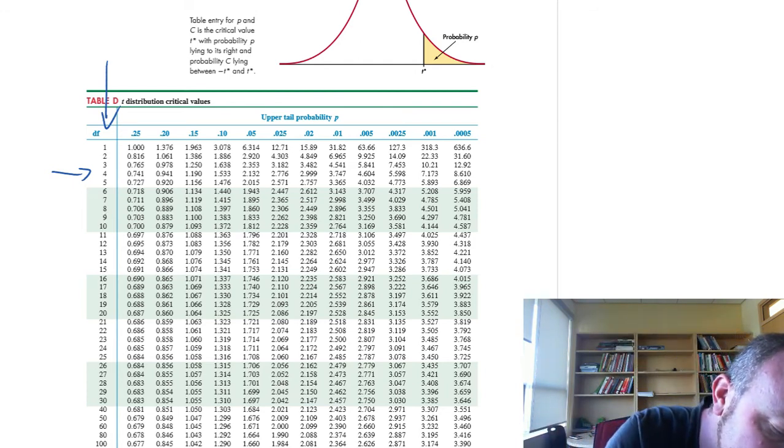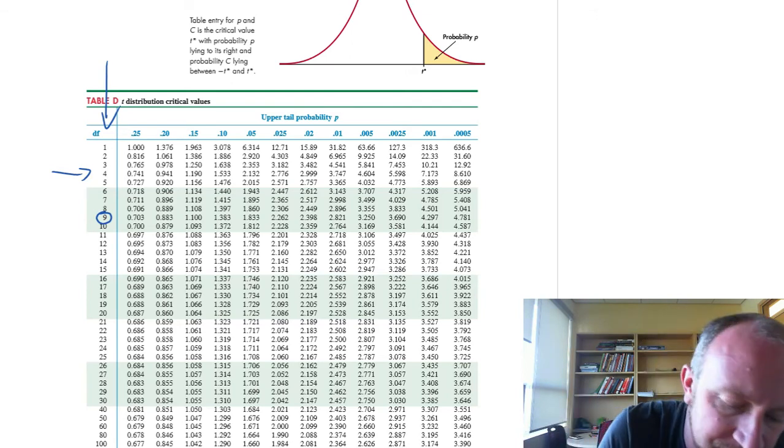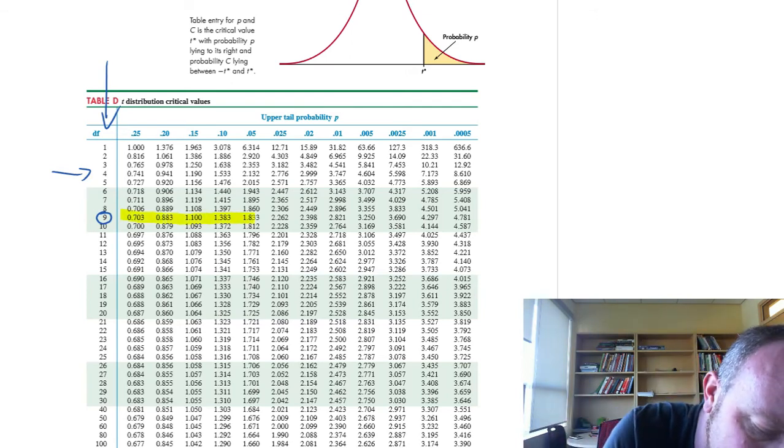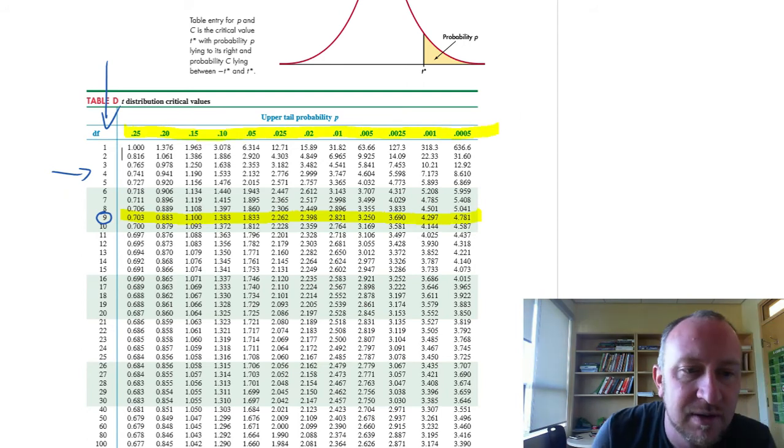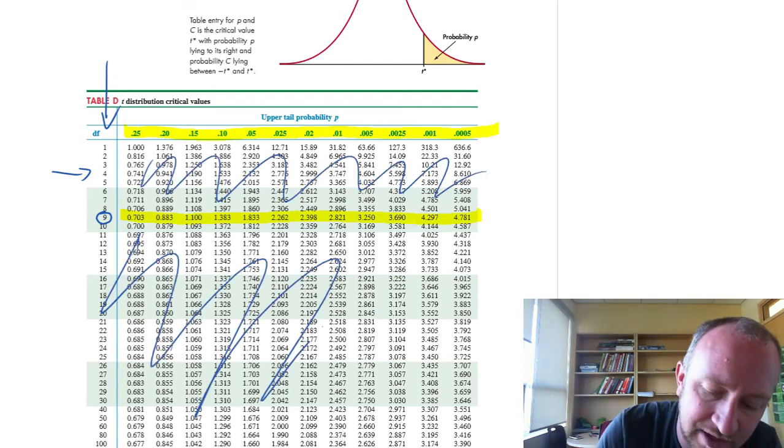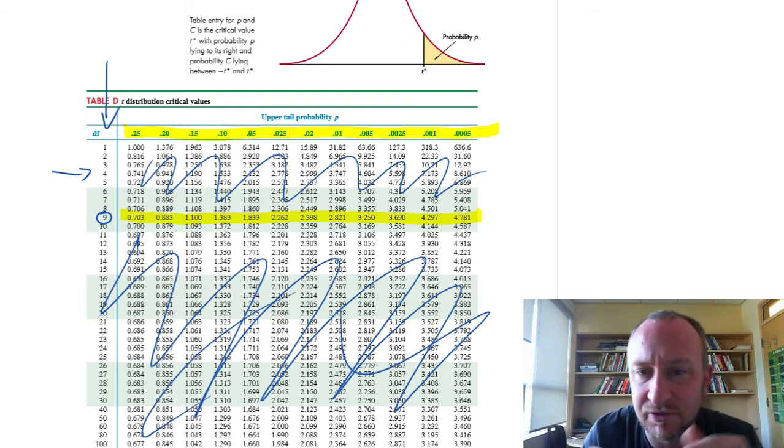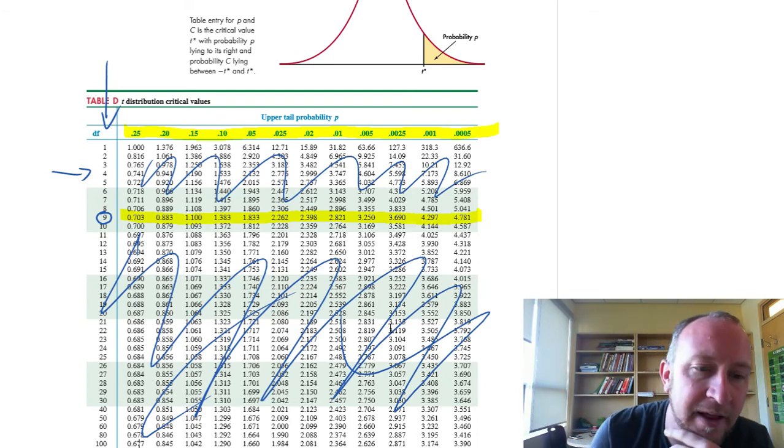So for our exercise, our distribution is the one that corresponds with 9 degrees of freedom. So now what that means is, all I need to even look at is this one row of t-statistics and their corresponding probabilities. We can now actually just completely ignore everything else in that table, because it's irrelevant for this exercise. The only thing that's relevant is what I've got highlighted there in yellow.